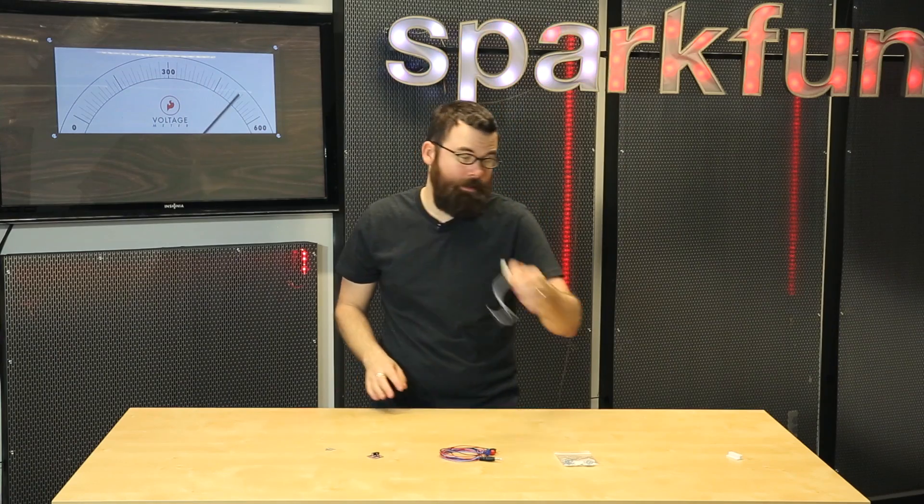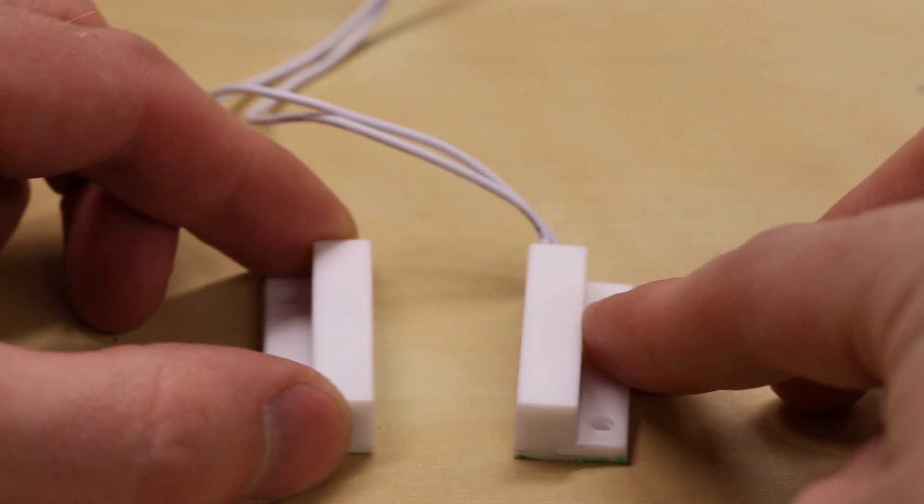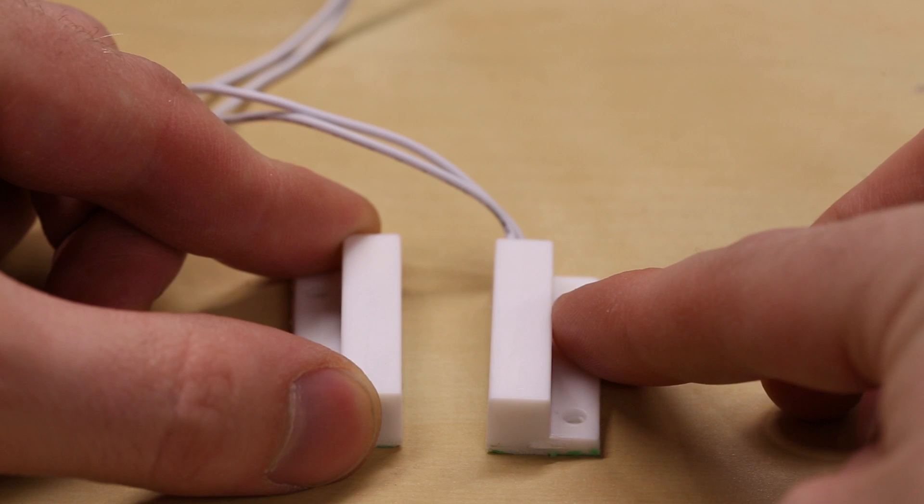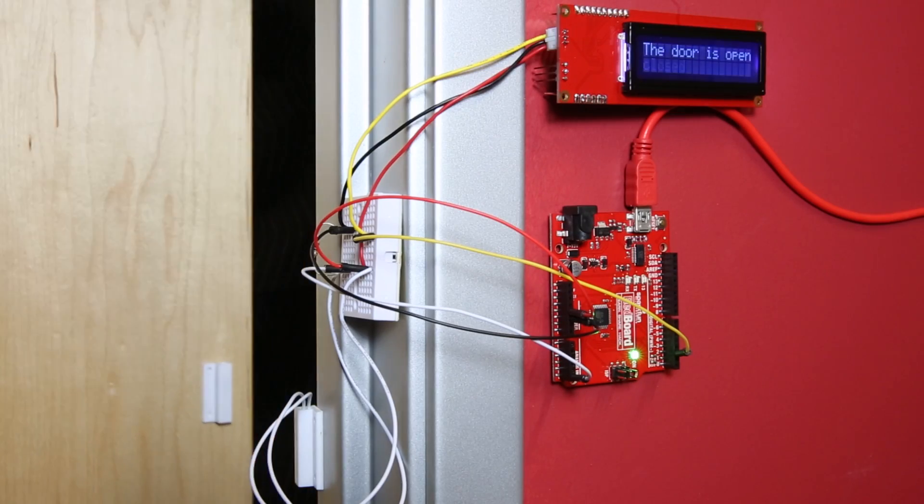And that's what's inside this little guy, and then the magnet is in that side. So when they come in contact or come in close proximity with each other, the switch will then be closed, and then when this is removed, the switch will be open.